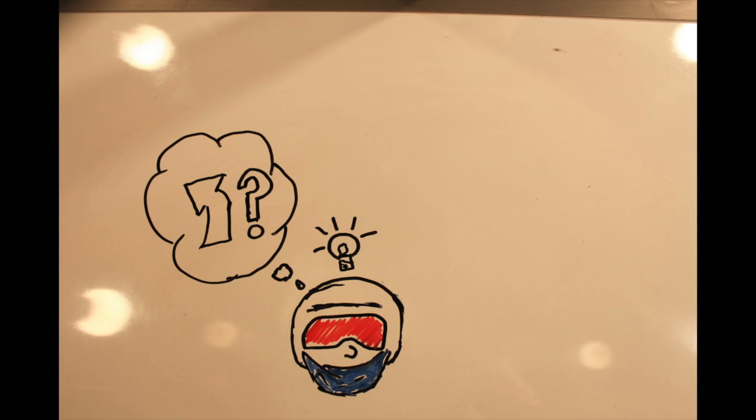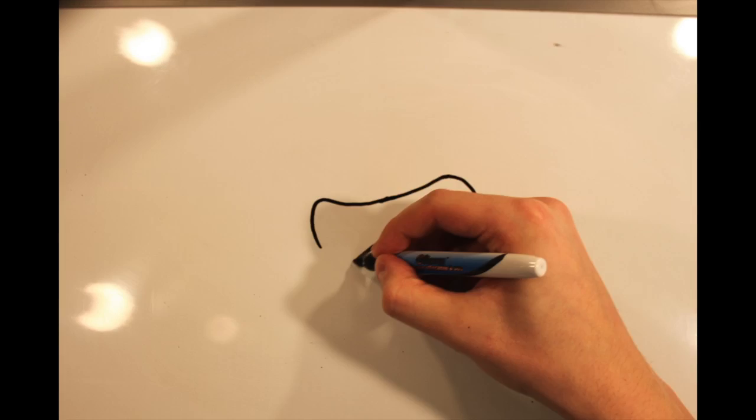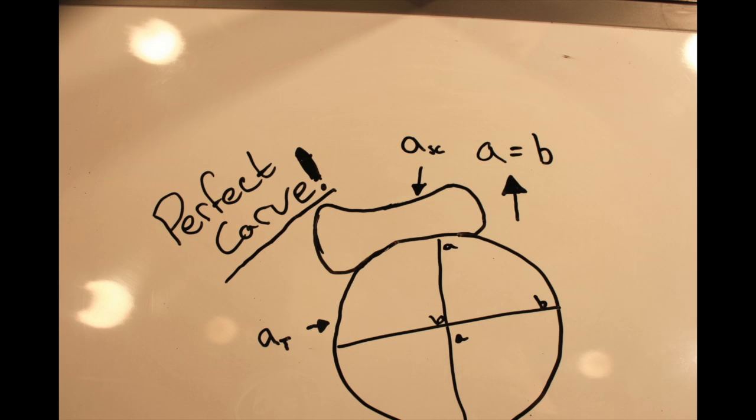The degree to which a snowboarder must turn to execute a perfect carve depends on the radius of the sidecut of the snowboard. For a pure carve to occur while the board is flat on the snow, the radius of the sidecut must equal the radius of the turn. For the purposes of this video, radius will be represented by A.